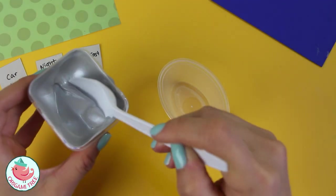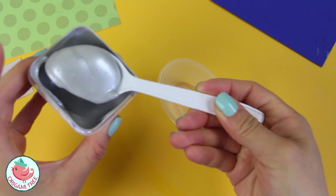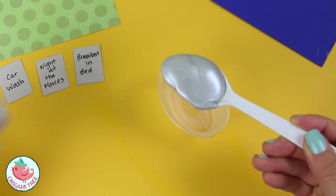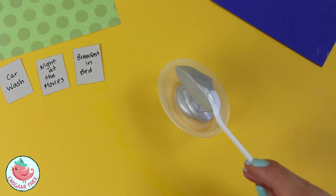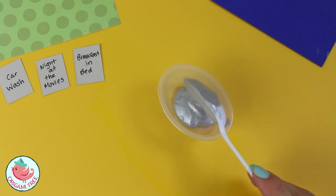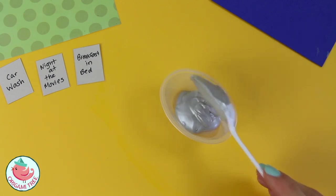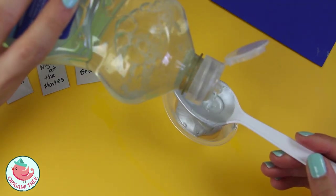And then in a small container, you want to scoop out two parts paint and one part dish liquid. So I'm just using one teaspoon of paint and half a teaspoon of dish liquid.